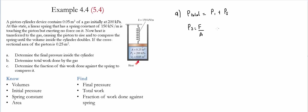We need to calculate that force. To calculate that force, we simply use the spring constant times the displacement. To find the displacement, we take the change of volume inside the system. The change of volume equals the cross-sectional area times the displacement. The change of volume equals the final volume minus the initial volume.